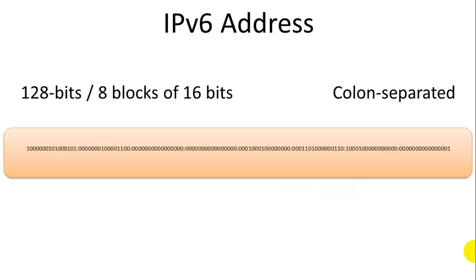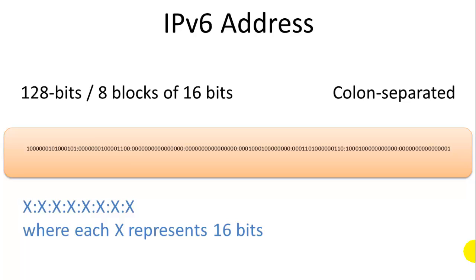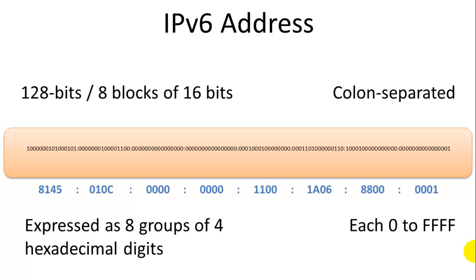An IPv6 address has 128 bits — that's 4 times more bits — arranged as 8 blocks of 16 bits. It's quite a bit longer and a little more challenging to read and write. They are colon-separated instead of period-separated: x:x:x:x:x:x:x:x with 8 groups, where each x represents 16 binary bits. This is how you're going to see IPv6 addresses written — as a hexadecimal address expressed as 8 groups of 4 hexadecimal digits, where each group can range from 0 to FFFF.